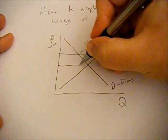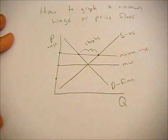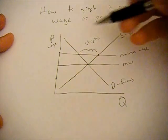We could also have a minimum wage that goes right through the equilibrium and in that case nothing changes in the market because the market wants that to be the wage and the minimum wage is set to that.